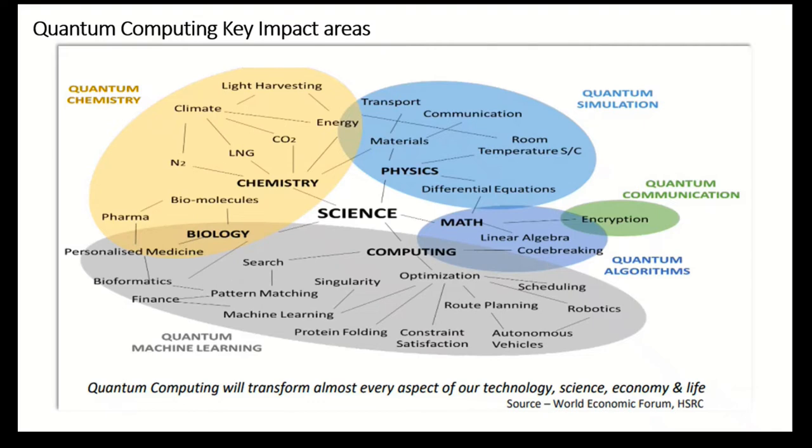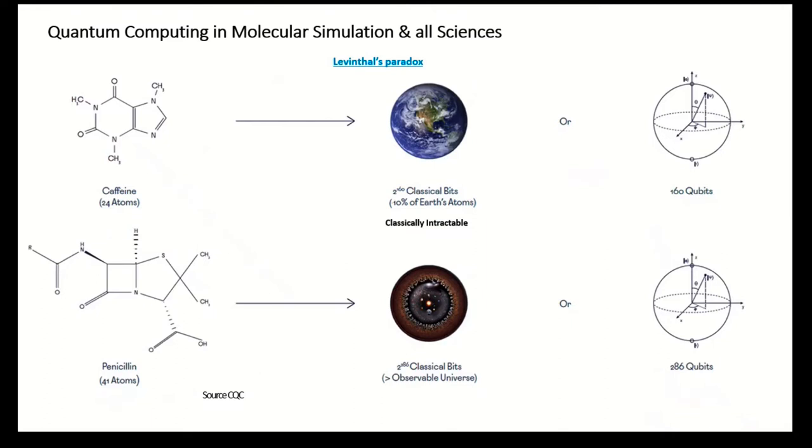Here you can see a glimpse of what the problem actually is. This is called Levinthal's paradox. What this means is with every atom or electron added to a molecule, how the complexity increases. If you see in the first figure, this is the caffeine molecule and it has got 24 atoms in it. To simulate the molecule we will need around 2 to the power 160 classical bits which is like 10 percent of all atoms in the universe. So it is classically intractable. No current classical computer or supercomputer or cluster can simulate this, whereas for quantum computers it will take only 160 qubits because of the phenomena of superposition and entanglement.